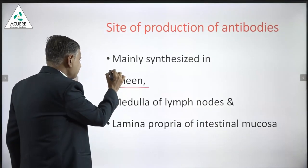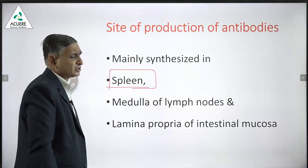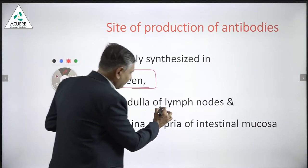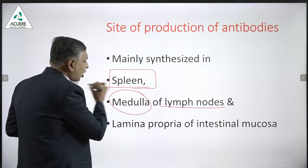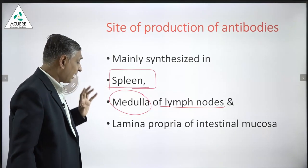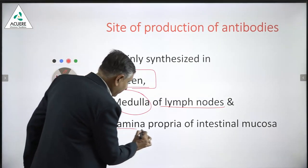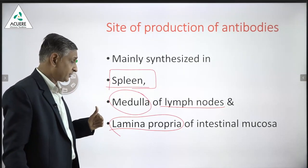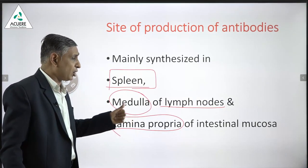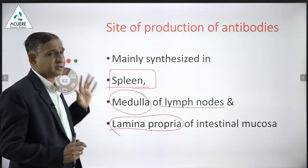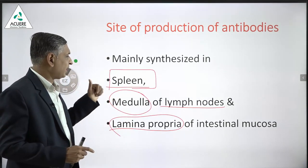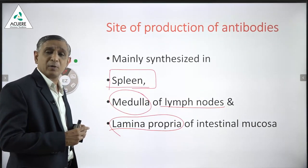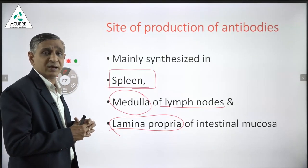The major organ for synthesis of antibodies in the body is the spleen, followed by the lymph nodes — especially the medulla of the lymph nodes — and the lamina propria of the intestine. In simple language, antibodies are produced in the spleen, lymph nodes, and lamina propria of the intestines.